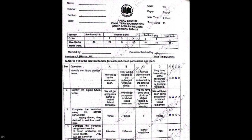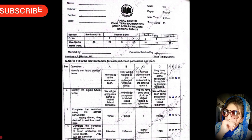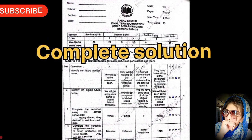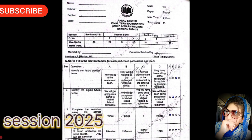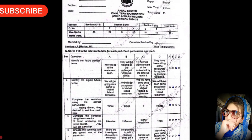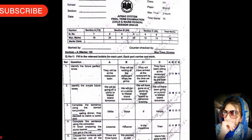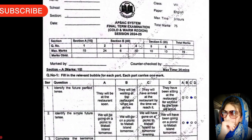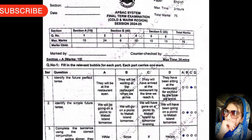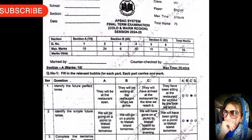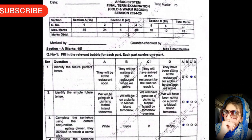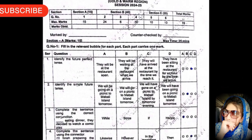Assalamu alaikum dear students, hope you all are fine. This video provides the complete solution of the English paper for Grade 8, ABS final time exam, cold and warm region session 2024. The paper is three hours long, total marks 75: Section A is 15, Section B is 40, and Section C is 20.